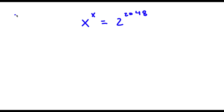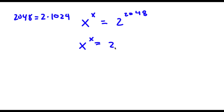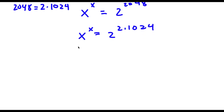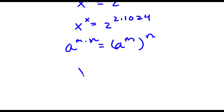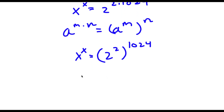Now, to start, 2048 is the same thing as 2 times 1024. So I can substitute in 2 times 1024 for 2048. So now I have x to the power of x is equal to 2 to the power of 2 times 1024. Now, if I have something in the form a to the power of m times n, this is the same thing as a to the power of m to the power of n. So in this case, 2 to the power of 2 to the power of 1024 — and 2 squared is simply equal to 4. So I have x to the power of x is equal to 4 to the power of 1024.